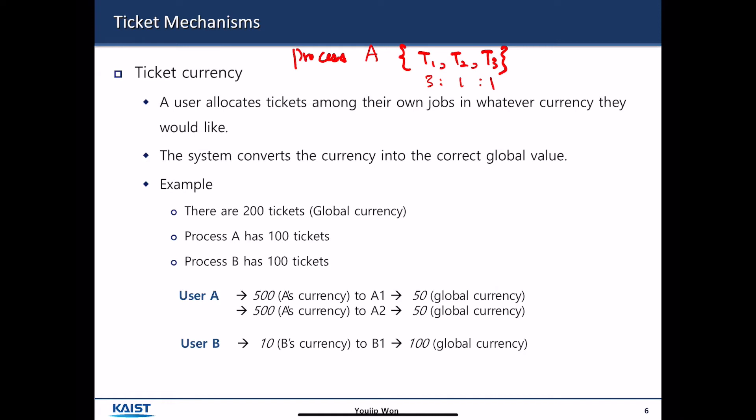Let me provide an example. Let's say there are 200 tickets. It's a global currency. And then process A has 100 tickets, and process B has also 100 tickets. So, CPU cycles will be divided into process B and A in 50-50 manner. And then process A or user A has two threads. It is A1 and A2.